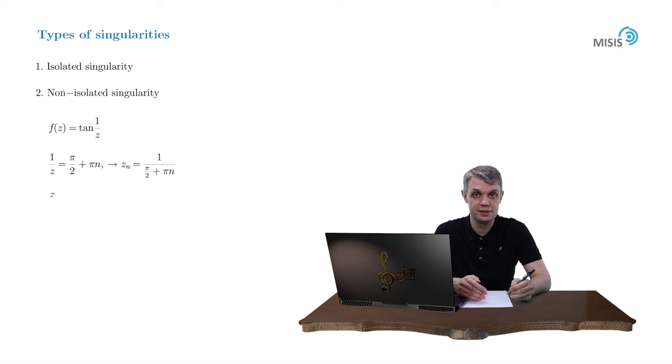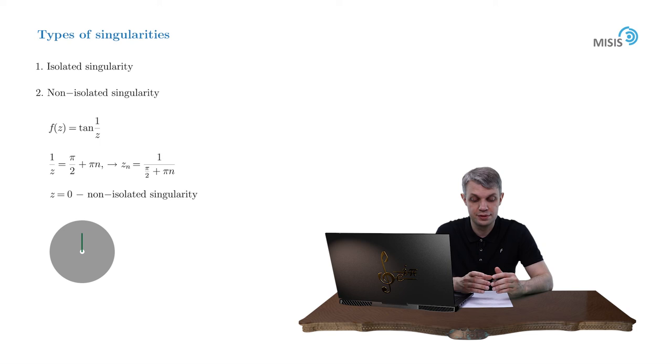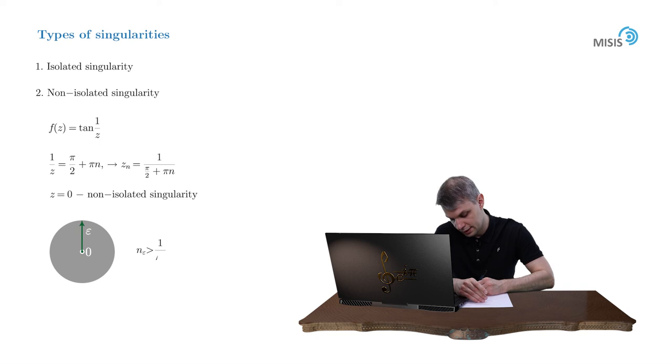And now the statement: z = 0 here is a non-isolated singularity. Why? Because no matter how small we choose the neighborhood of z = 0, we will always be able to find such a big n that the pole z_n will be positioned inside this neighborhood. And that precisely means that this point is a point of a non-isolated singularity.